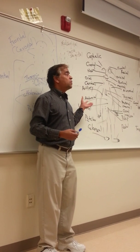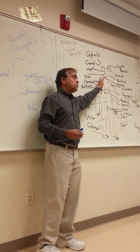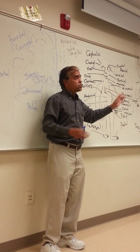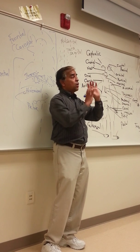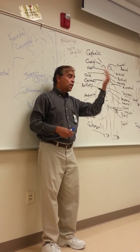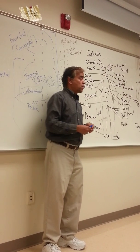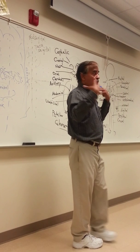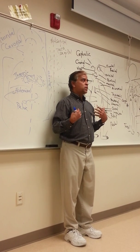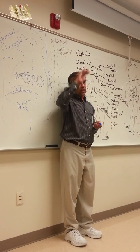Various organs working together form an organ system. For example, the digestive system includes the teeth, tongue, stomach, and liver — many organs all working together as one system. Similarly we have the reproductive system, circulatory system, and so on. And finally we have the organism level — plants, animals, humans.